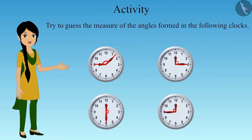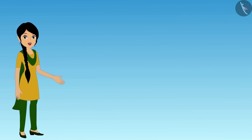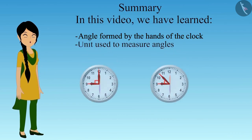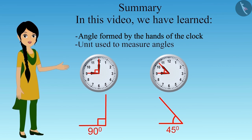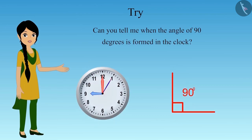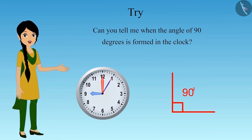Try to guess the measures of the angles formed in the following clocks. In this video, we have learnt about the angles formed by the hands of the clock and the unit used to measure angles, i.e., degree. Can you tell me when the angle of 90 degrees is formed in the clock? Think for a while — we will discuss this in detail in the next video, where we will see some interesting examples of angles formed in the clock. Thank you.